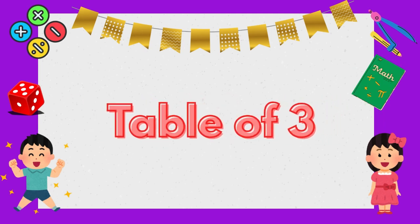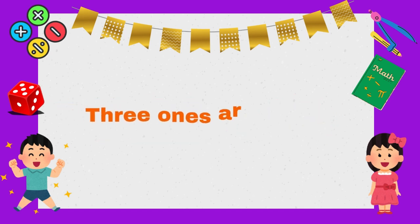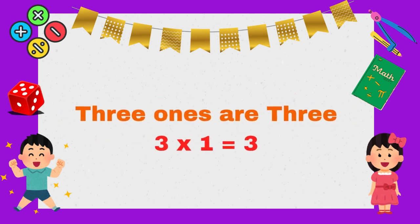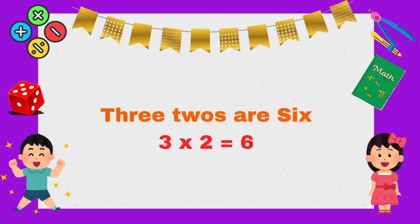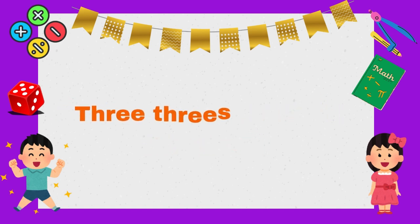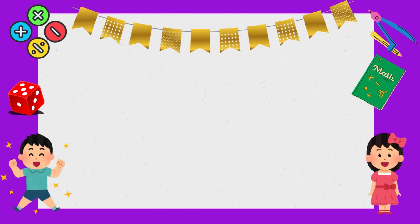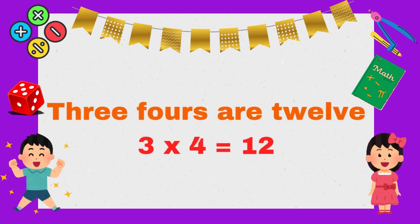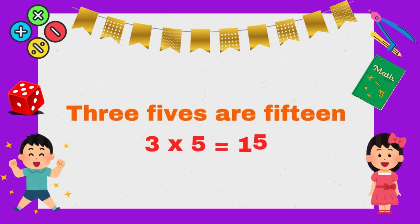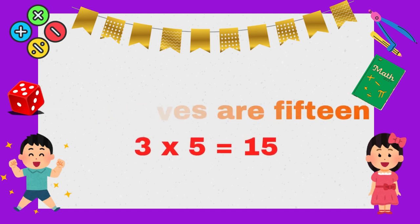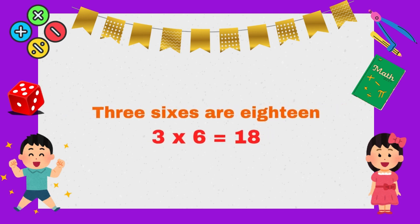Let's learn. Table of three. Three ones are three. Three twos are six. Three threes are nine. Three fours are twelve. Three fives are fifteen. Three sixes are eighteen.